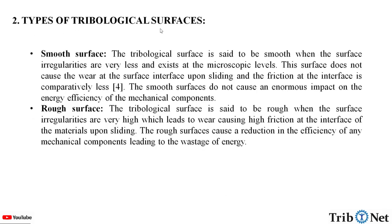What are the types of tribological surfaces? Smooth surface and rough surface. Smooth surfaces: the tribological surface is said to be smooth when the surface irregularities are very less and exist at the microscopic level. This surface does not cause wear at the surface interface upon sliding, and the friction at the interface is comparatively less. The smooth surfaces do not cause an enormous impact on the energy efficiency of the mechanical components.